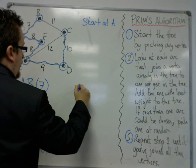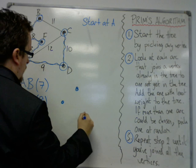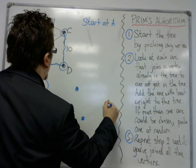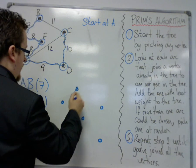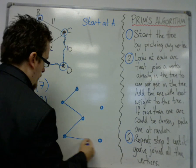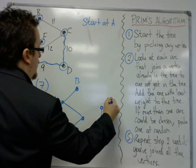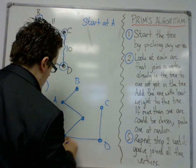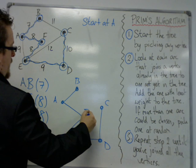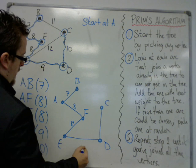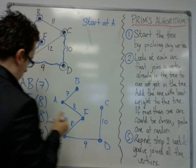So my minimum spanning tree looks something like this. Label it. A, B, C, D, E, F. And make sure the weights are on there as well. 7, 8, 8, 9, and 10.